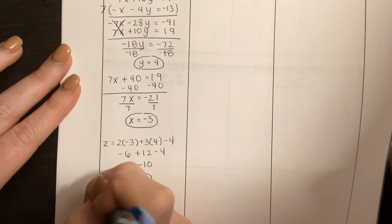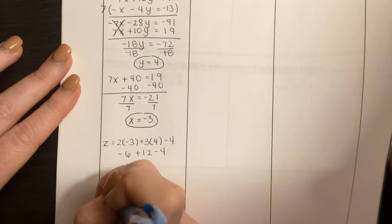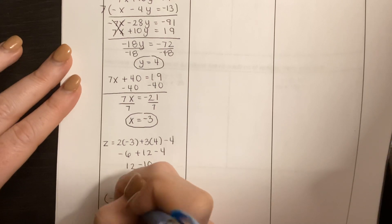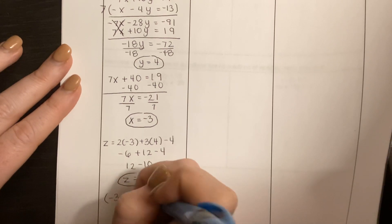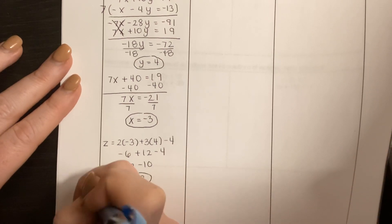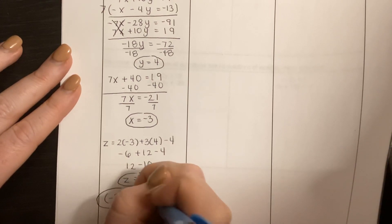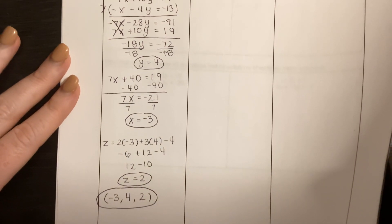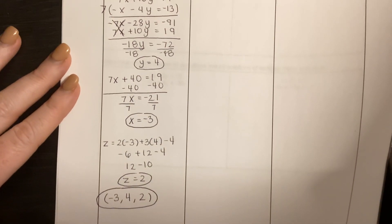Write it as an ordered pair — always X first, then Y, then Z. All right, so that's how you're going to solve using substitution.